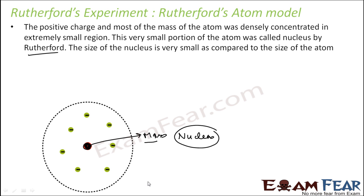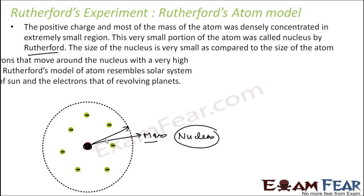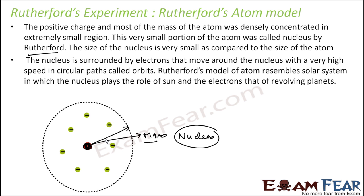The size of the nucleus is very small compared to the size of the atom. If the nucleus were the size of a cricket ball, the atom would have a radius of five kilometers. To maintain neutrality, the nucleus is surrounded by electrons moving at very high speed in some orbits.